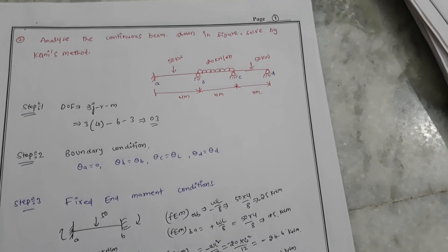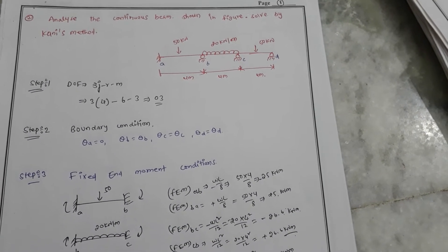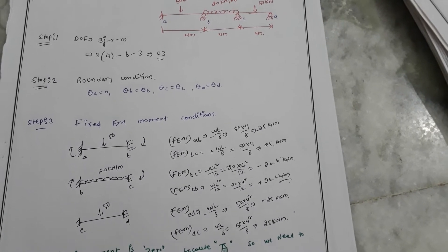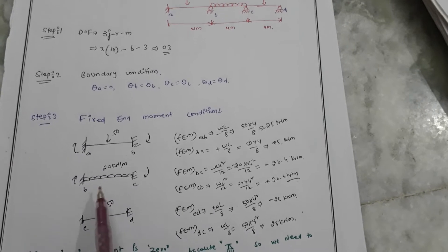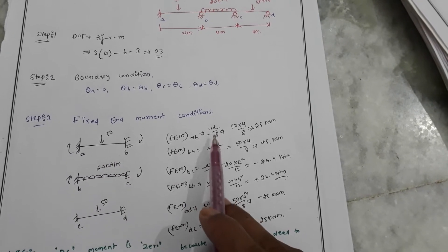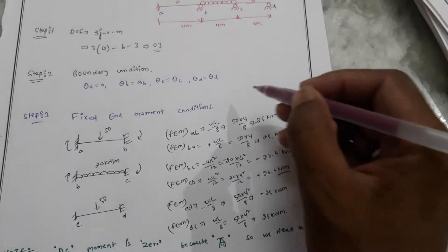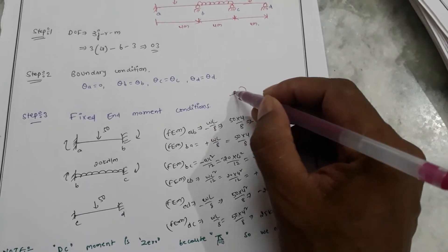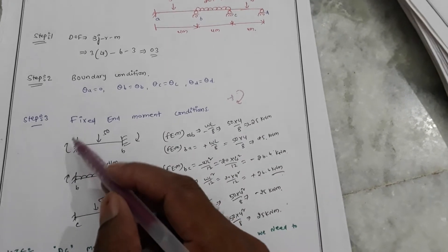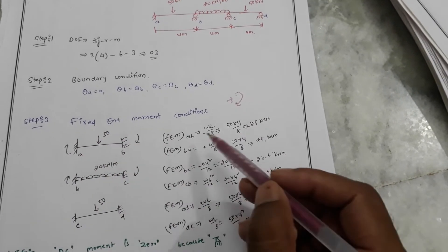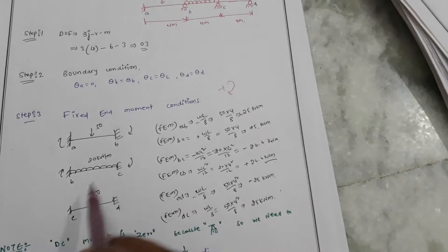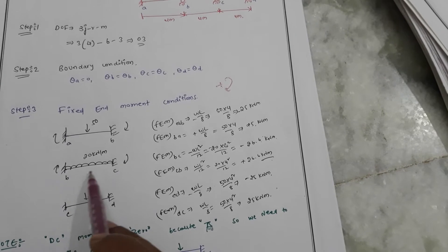The Corners Method is a displacement method. Our assumption is to find the fixed end moment conditions. For a point load, the fixed end moment is wL²/8. Our sign convention is: clockwise rotation is positive from the right side, so right side rotation is positive and left side rotation is negative. Here we get a negative value on one side and positive on the other.